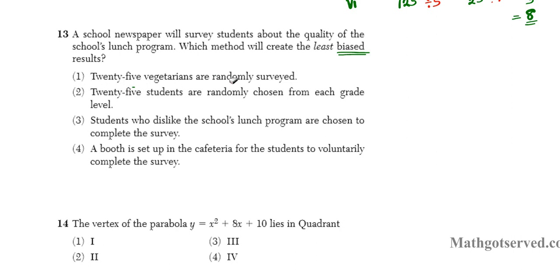The first one says 25 vegetarians are randomly surveyed. So what's the problem here? Vegetarians, what do you think their viewpoints would be about non-vegetarian food, food containing meats. They're gonna be leaning away from it, right? And what if the school lunch program does not cater to vegetarians? So since these people have a specific dietary preference, they are already biased by default. So if you restrict your sample space to people that are already biased towards a certain type of food, that's not a fair sample space. So this is not a good option since it's biased towards vegetarians. Number two says 25 students are randomly chosen from each grade level. Is there any bias here? If they're randomly chosen, do they lean in any direction? Since there's a randomization in the selection process, there is no bias in the selection process. So this should be the best option that there is.